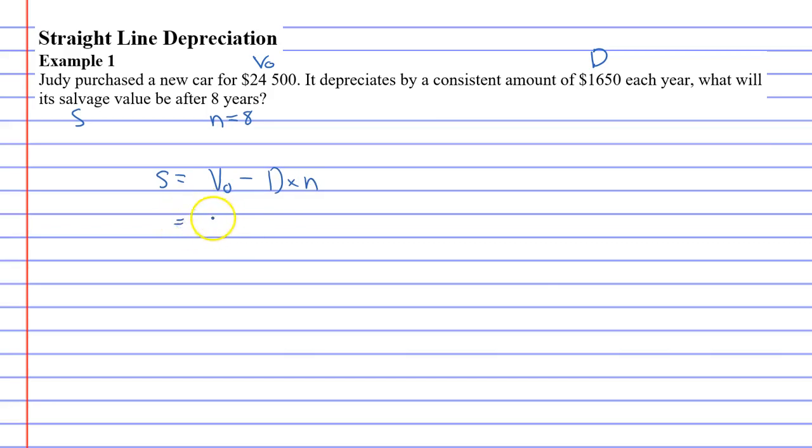And V0 is the original amount, $24,500, minus our depreciation value, $1,650, times the number of years, eight.